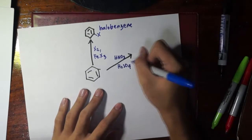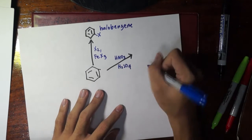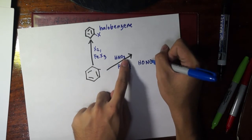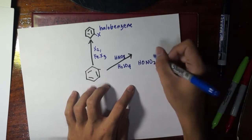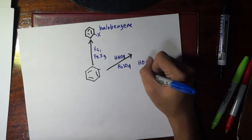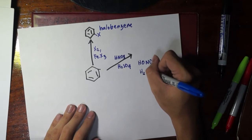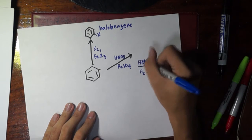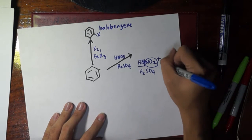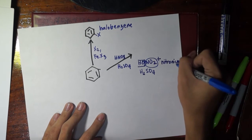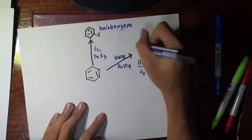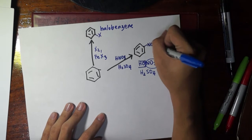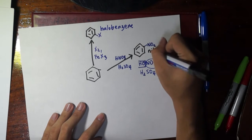What if we add nitric acid and sulfuric acid? Sulfuric acid acts as a dehydrating agent: it removes OH from nitric acid (HO–NO2), leaving NO2 with a positive charge — this is the nitronium ion (NO2+). The nitronium ion then attacks the ring as the electrophile, and the product is nitrobenzene. This reaction is called nitration.